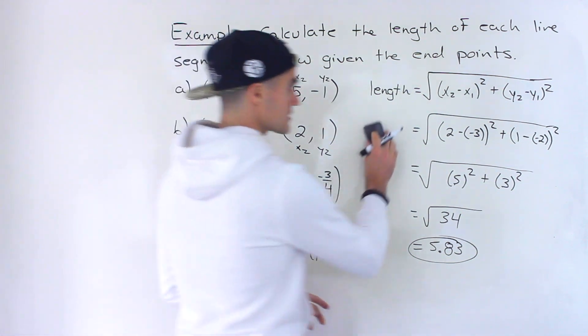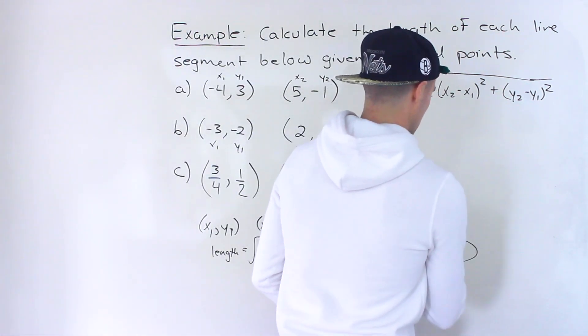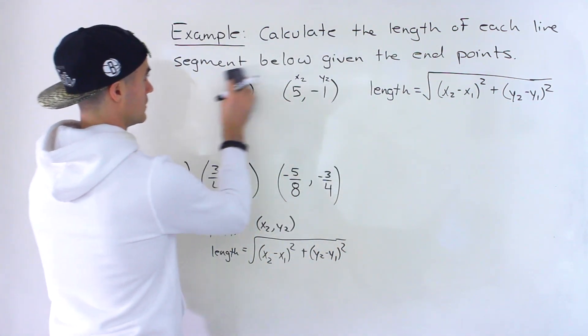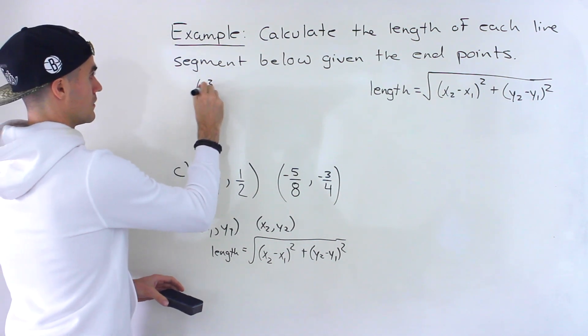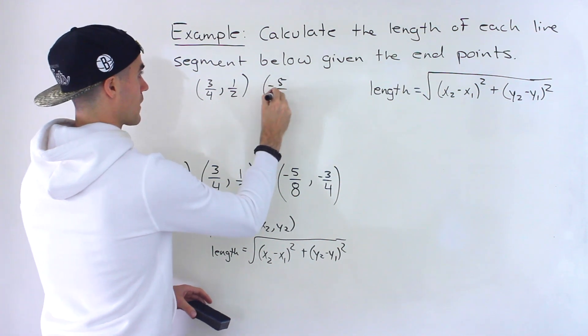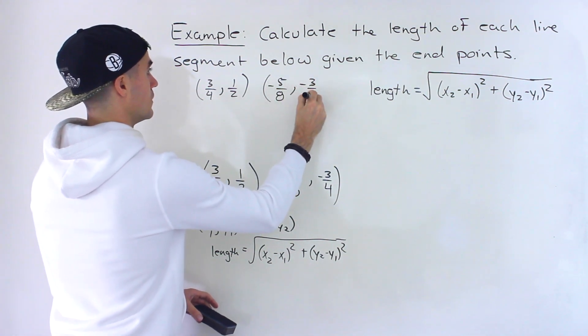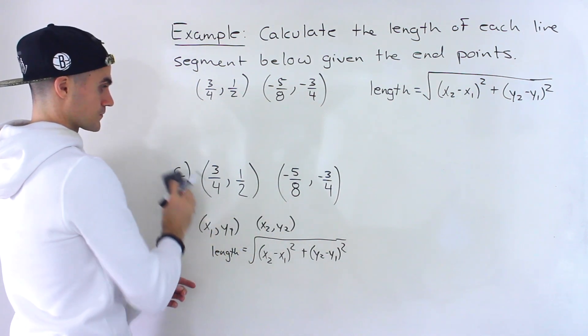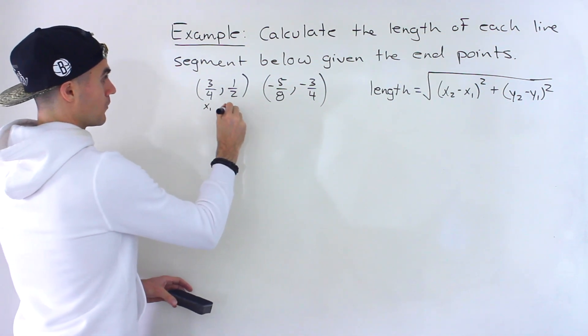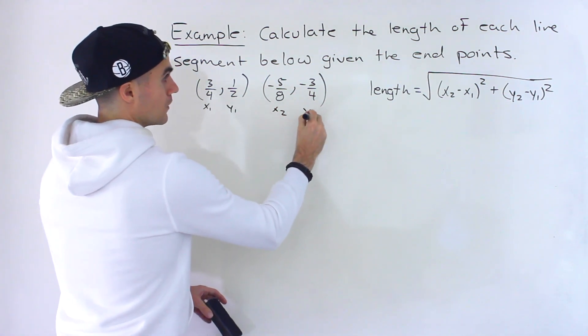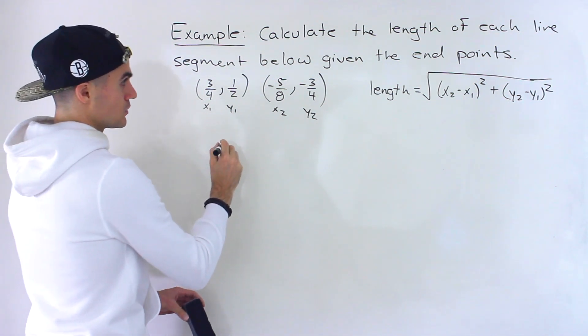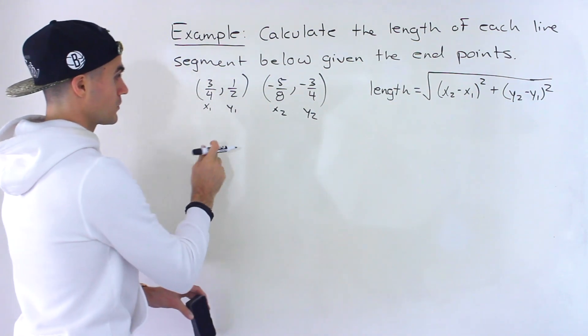Now part C, there's going to be a lot more algebra involved. So let me actually, I'll write C over here just to give myself some room in case we need it because we're working with fractions here. So you got to be really careful with the algebra. So let's label these. This would be x1, y1. This would be x2, y2. So before plugging it into the formula, let's actually just deal with each step separately just because we're working with fractions here.